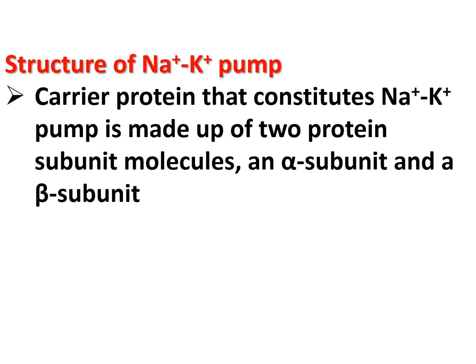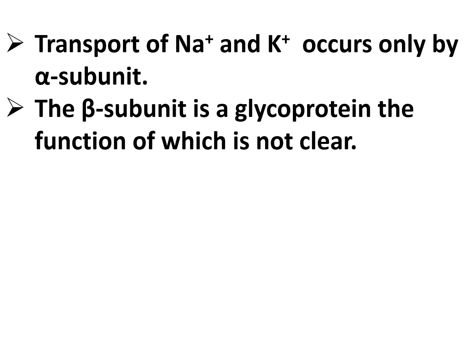Regarding the structure of the sodium-potassium pump: the carrier protein is made up of two protein subunit molecules — an alpha subunit with a molecular weight of about 100,000 daltons and a beta subunit with a molecular weight of about 55,000 daltons. Transport of sodium and potassium occurs only via the alpha subunit. The beta subunit is a glycoprotein whose precise function is not clear.